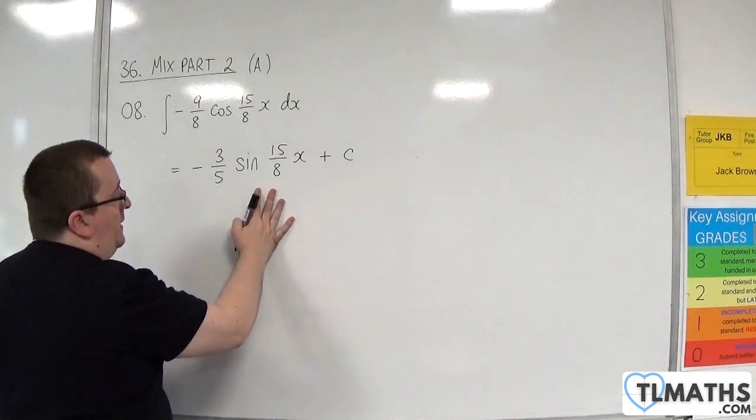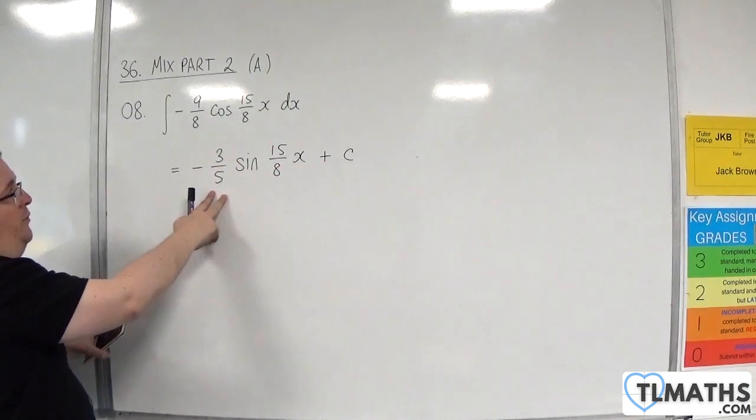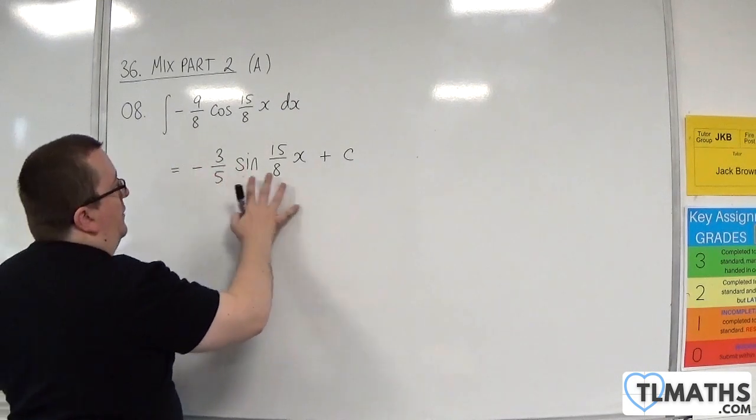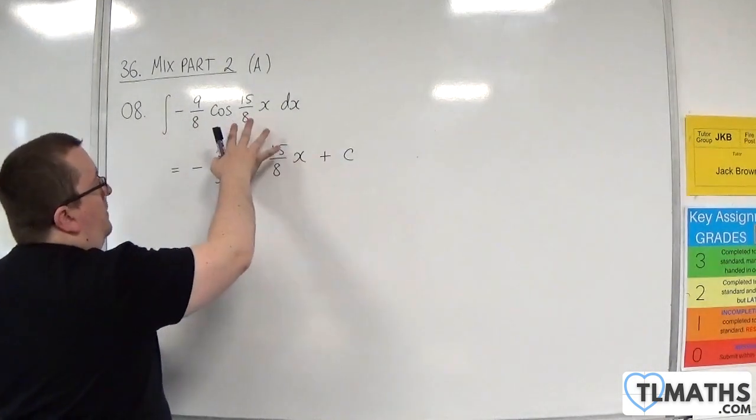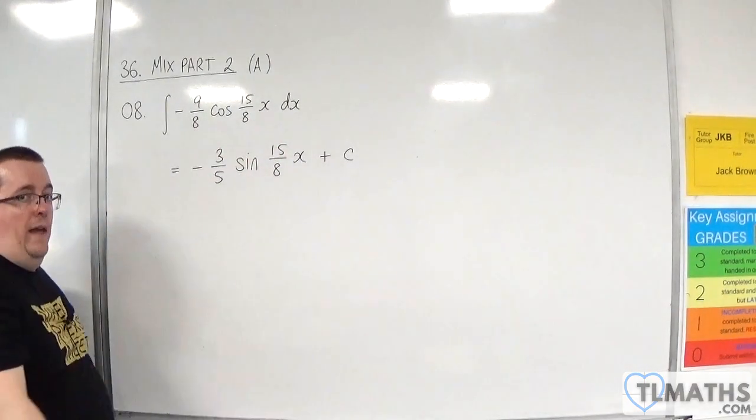So when you differentiate this back, the 15 eighths comes up and multiplies with the minus 3 fifths, which will make the minus 9 eighths. And the minus sine goes to minus cosine. So this should differentiate back to what we've got there.